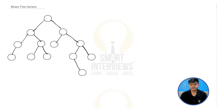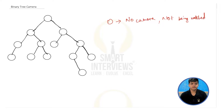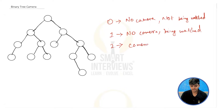To solve this problem, we are going to divide the nodes into three types. Type 0: there is no camera and the current node is not being watched. Type 1: there is no camera but the node is being watched by one of its neighboring nodes — a parent or child. Type 2: there is a camera in the current node, so it will definitely be watched.